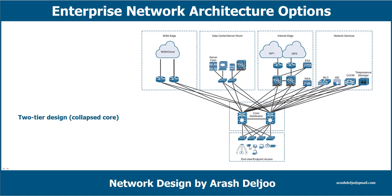Here you can see we have the access layer for end user and endpoint access. We also have the combined core and distribution layer. This distribution layer is connected to the WAN edge, to the data center or server farm, the internet edge, and then network services. This combined distribution and core layer provides connectivity to the WAN — meaning remote data centers, other branches, and internet — as well as network services like the Wireless LAN Controller, Identity Service Engine, CUCM, and Unified Presence Manager.